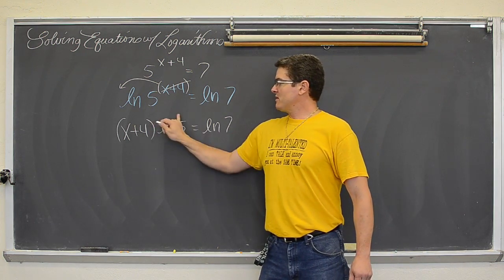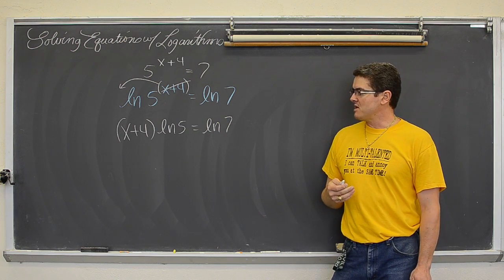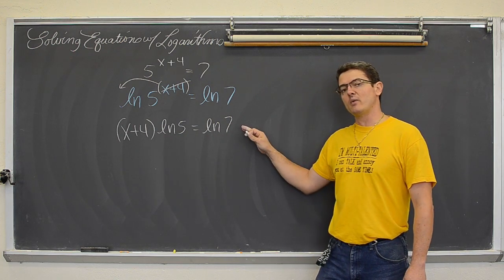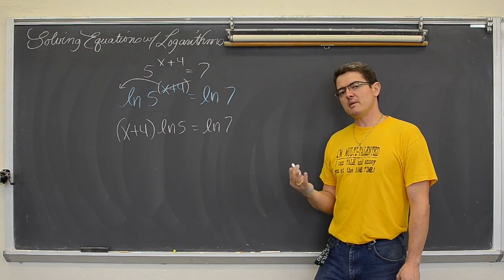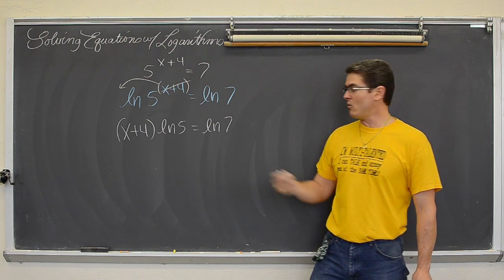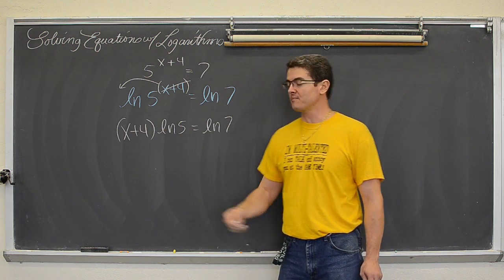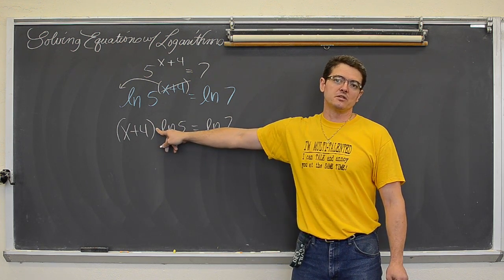Now you can distribute this natural log or that decimal through the parenthesis, but I am going to show it where we just divide it away from the x. And keep it more like, well I am going to save myself a step and I don't want to have this in decimal form and distribute it through the parenthesis. So we are going to undo that multiplication with division.